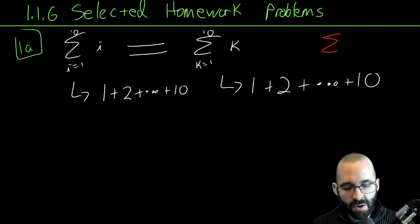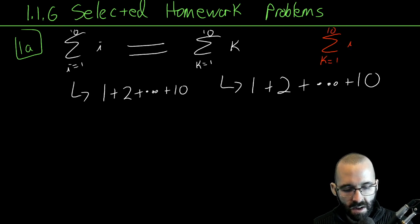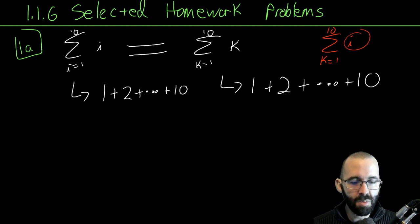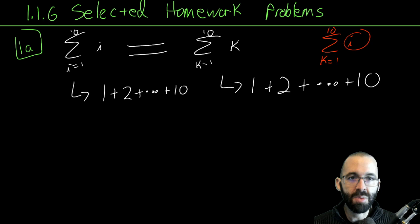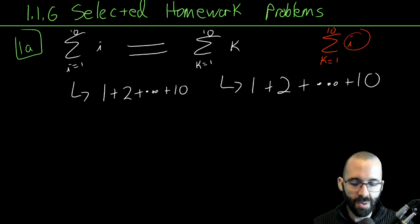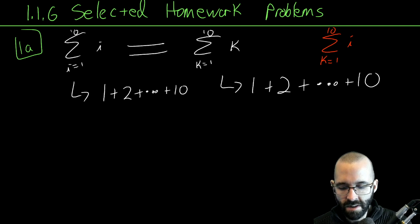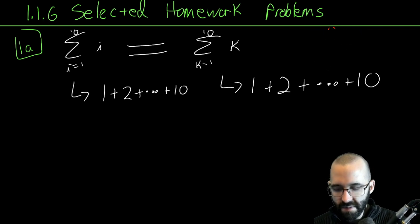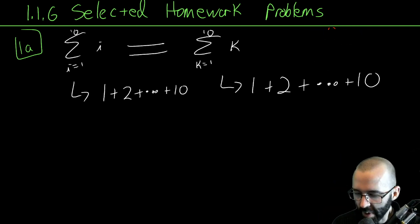Now if I wrote something like this, they're not equal because there are no k's to plug in. This would just be 10i — i plus i plus i plus i, ten times. That one wouldn't be equal. But that's not the actual problem.